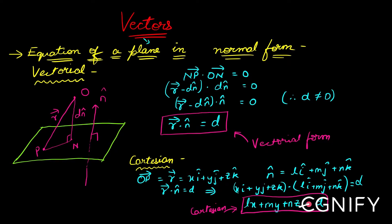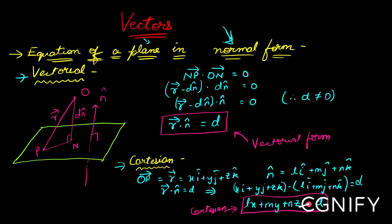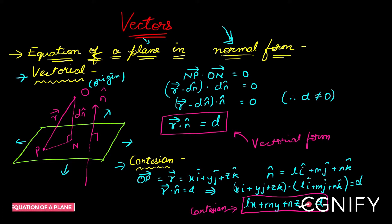Let us now look at the equation of the plane in normal form. We will look at both the vectorial and Cartesian forms of this equation. This form is called the normal form because the plane, which extends in all directions, is at a certain distance from the origin O. Imagine the origin in three-dimensional space — I've placed a plane at a distance small d from the origin.